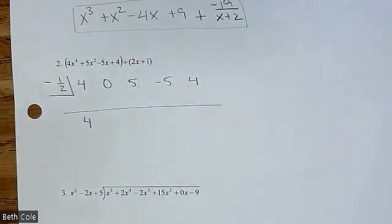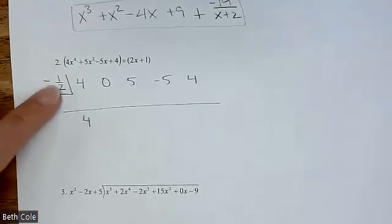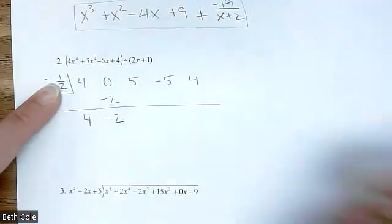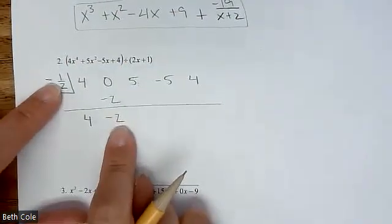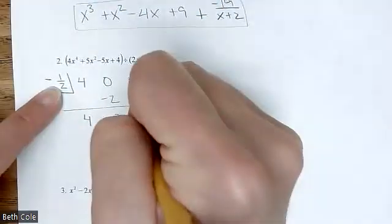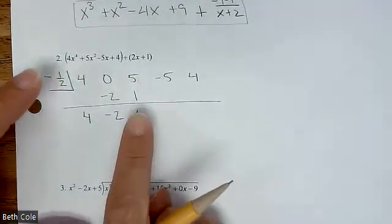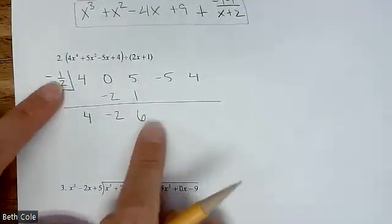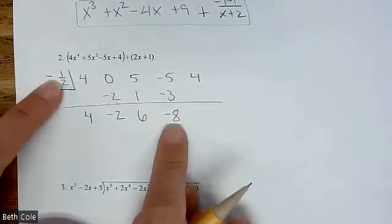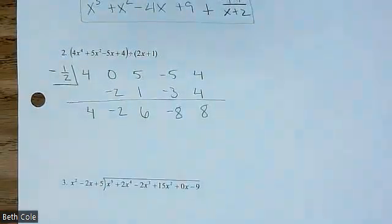Half of 4 would be 2, but it is going to be negative 2. Add the column: negative 2. When you multiply these, the negatives are going to cancel. Half of 2 is 1. Add the column, get 6. Negative a half times 6 is negative 3. Add: negative 8. Negatives cancel. Half of 8 is 4. Add, get 8.